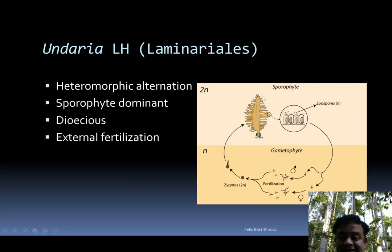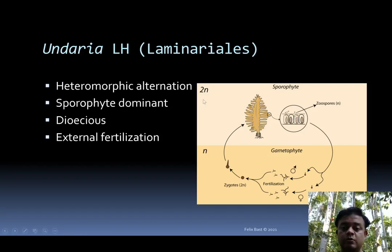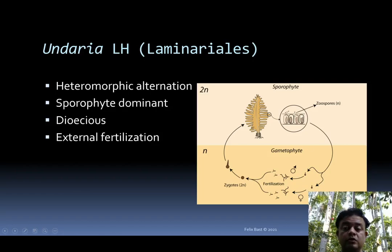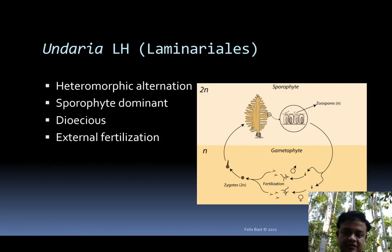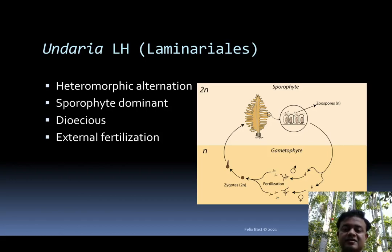Undaria is also quite similar. The undaria life cycle: the sporophyte releases mature zoospores. The formation of zoospores is meiotic — a reductive cell division — so from diploid, zoospores become haploid. This is also the sex-determining step. Some zoospores are male, some female. Male zoospores develop into male micro-gametophytes, and females develop into female micro-gametophytes. These micro-gametophytes release the respective gametes. Gametophytes release gametes — male and female gametes then fertilize to form the zygote. The zygote is diploid and develops back into the sporophyte generation. That is the Undaria life cycle in summary.